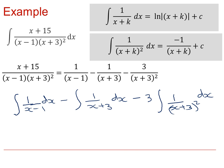Using standard results, as shown in the grey boxes above, this would give me ln x minus 1 minus ln x plus 3, minus 3 times negative 1 over x plus 3, plus my constant of integration.